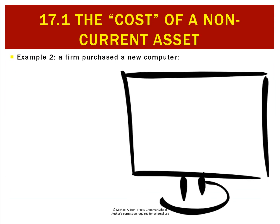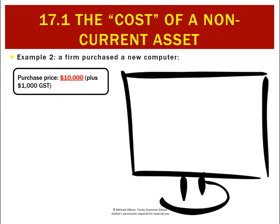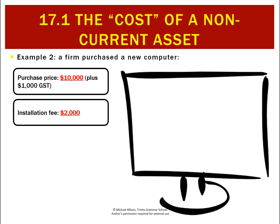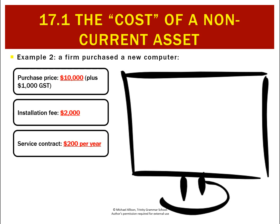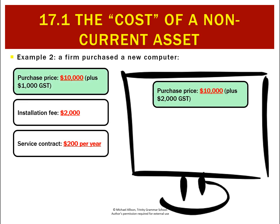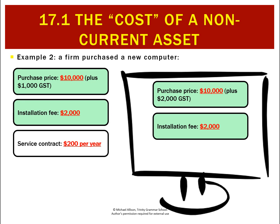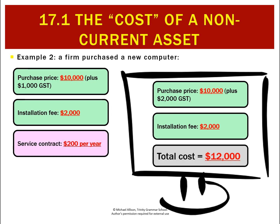Let's take a second example. We bought a new computer with the following costs: a purchase price of $10,000, an installation fee of $2,000, and a service contract of $200 per year. The cost will be the purchase price plus any cost required to get it in a condition and location to earn revenue that will last a lifetime. Based on that, we include the installation fee and leave out the service contract. The total cost is $12,000.